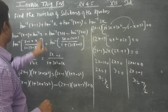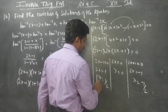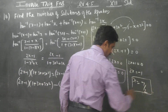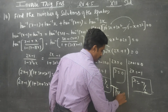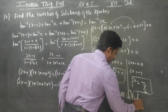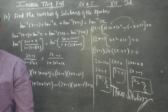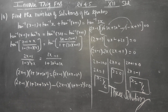Therefore the number of solutions is 3. The three solutions are x equals 1/2, x equals 0, and x equals minus 1/2. Thank you.